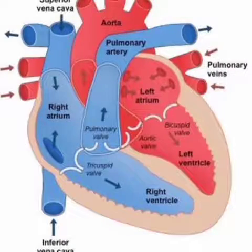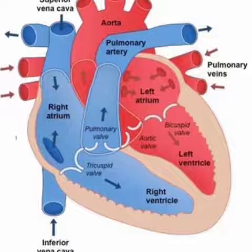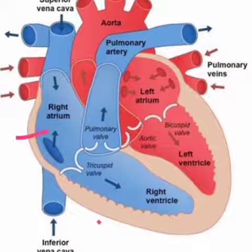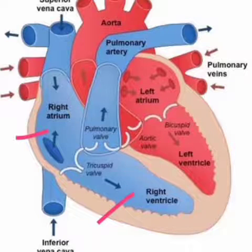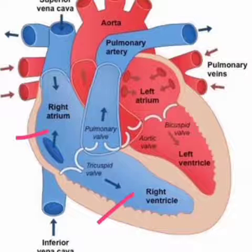Today we are going to discuss the structure of the human heart. The human heart is four-chambered. The upper chambers are the right atrium and the left atrium. The lower chambers are the right ventricle and the left ventricle. So these are the four chambers of our heart.